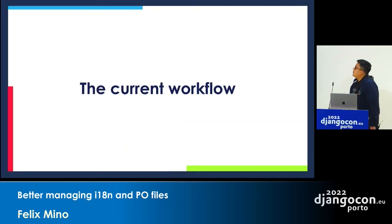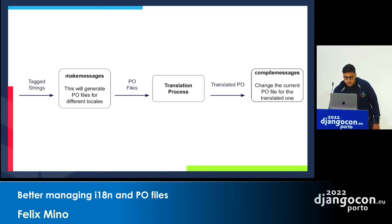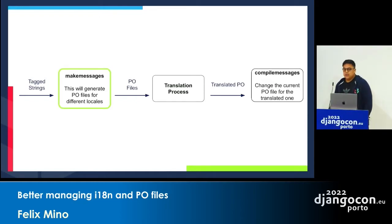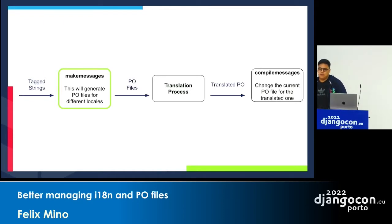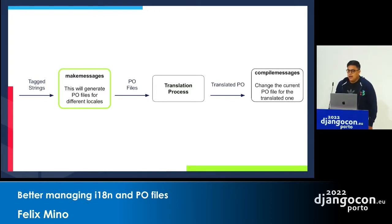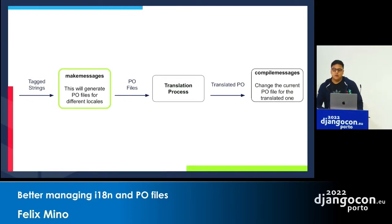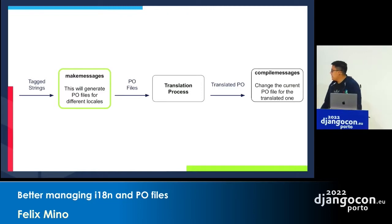So what is the current workflow in Django? It looks like this: we have a 'make messages' command and a 'compile messages' command. The 'make messages' command goes through all the HTML templates and extracts the target strings to the PO files. Then we send this PO file for translation — we translate ourselves or use a tool. Then we take the translated PO back into our codebase and run 'compile messages', which creates a binary that Django can understand, and our site will be translated.